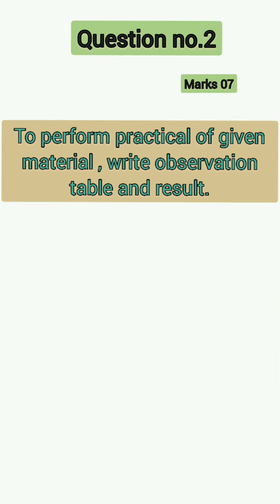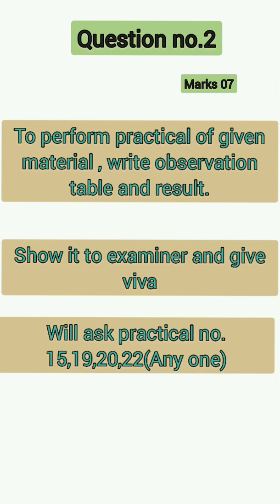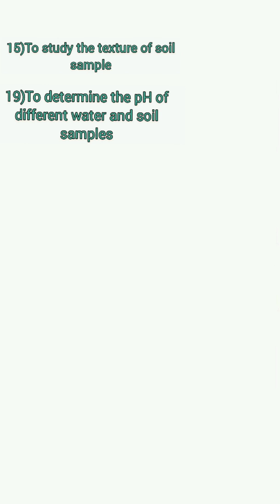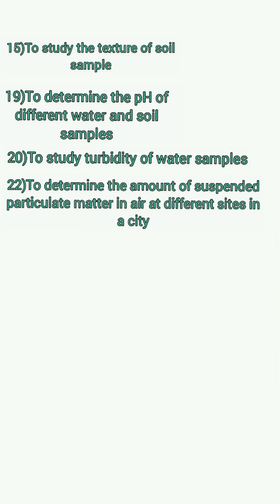Question number 2, total marks 7: To perform the practical of given material, write the observation table and result in your answer sheet, then show it to the examiner and give viva. In this question, practicals number 15, 19, 20, and 22 may be asked — you have to perform any one according to your question paper. Practical 15 is to study the texture of a soil sample. Practical 19 is to determine the pH of different water and soil samples. Practical 20 is to study the turbidity of water samples. Practical 22 is to determine the amount of suspended particulate matter in air at different sites in a city. Any one of these four practicals will be asked in the exam.